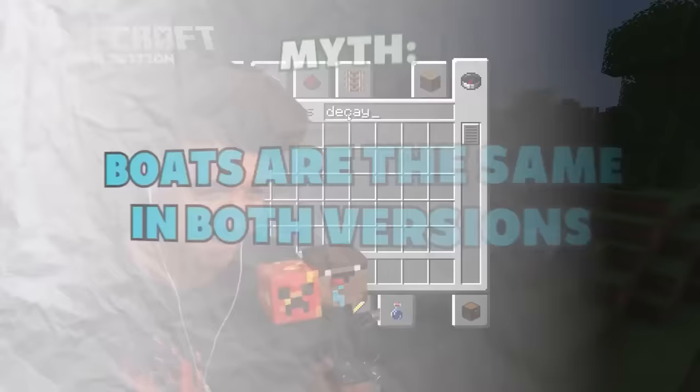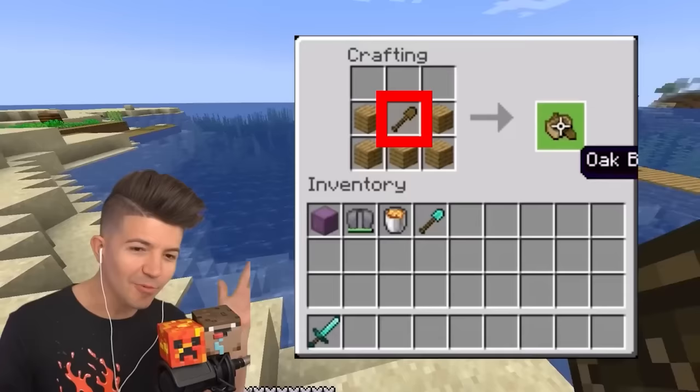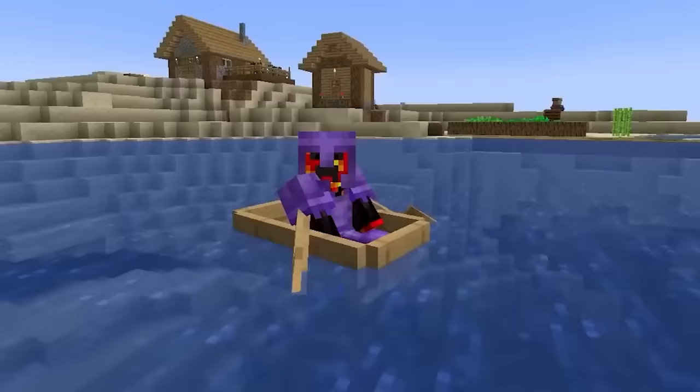Boats are the same in both versions. This is the recipe on Java, and this is the recipe on Bedrock — do they look the same? One of them has a shovel, which just makes it more annoying to craft, if I'm being honest.